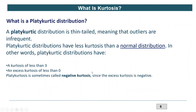Now let's understand platokurtic distribution. Platokurtic means thin-tailed — very little possibility of data falling on the tail, or very little possibility of getting an outlier. If you calculate the kurtosis value for a platokurtic distribution, it will be less than 3. The excess kurtosis (actual kurtosis minus 3) will be negative. If your excess kurtosis value in Excel or Minitab is negative and far away from zero, we can decide this is a platokurtic distribution. Generally, a uniform distribution follows this kind of kurtosis value.